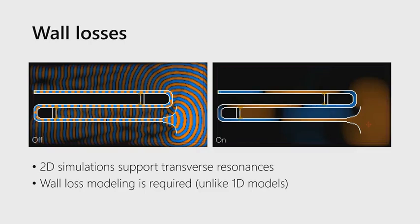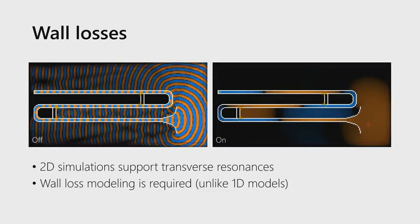Another thing we have to account for is wall losses along the bore. In digital waveguides, being one-dimensional, they don't need to worry about this because they don't account for transverse oscillations. In our simulation, we look at both longitudinal modes along the bore and transverse modes, which causes whistling artifacts from excitations. Modeling wall losses is very essential in 2D — the details are in the paper, but I'll show you with and without.